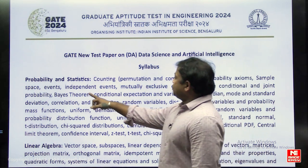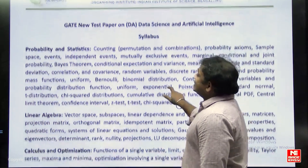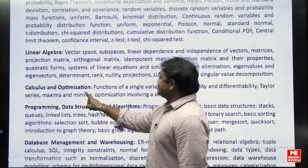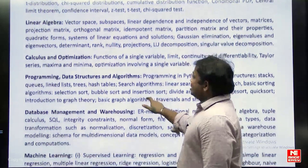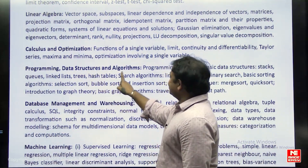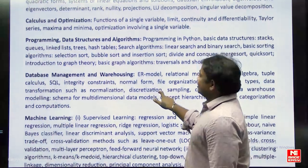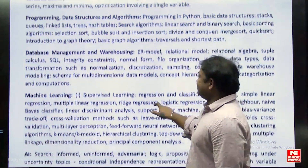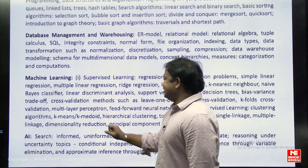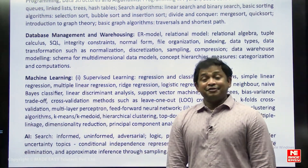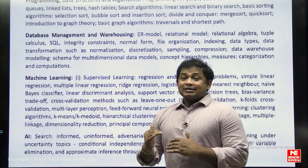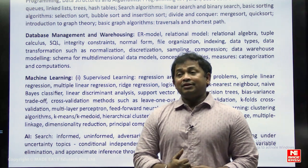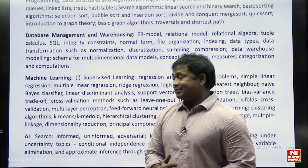The first subject is Probability and Statistics. Second is Linear Algebra. Third is Calculus and Optimization. Fourth is Programming, Data Structures, and Algorithms. Fifth is Database Management and Warehousing. Sixth is Machine Learning. And the seventh is Artificial Intelligence. So, total seven subjects are included in the DA syllabus.